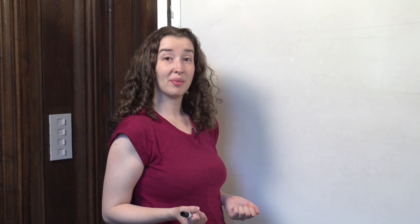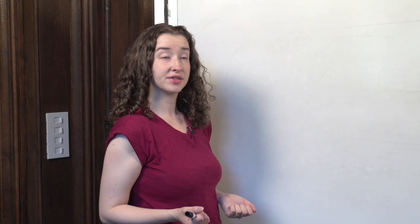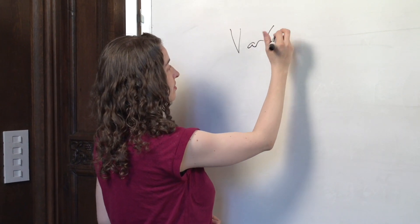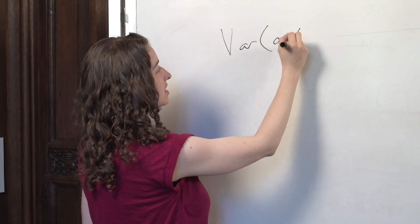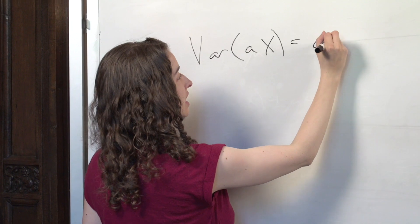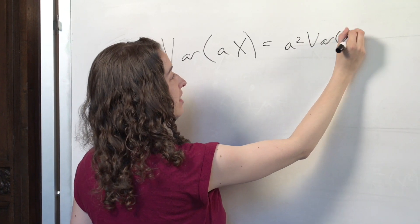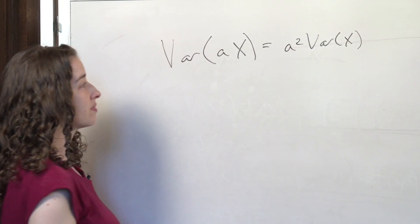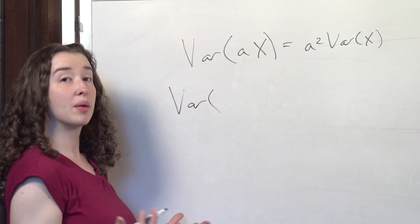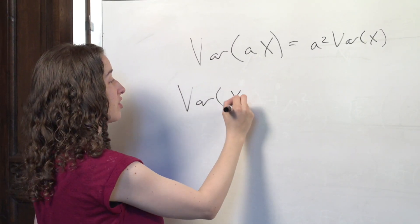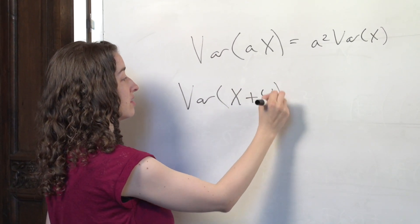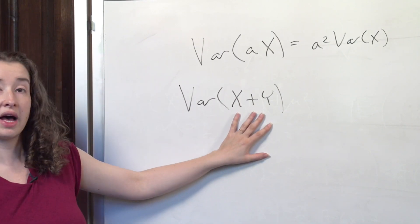Let's continue talking about properties of the variance. We said that the variance of a times x is equal to a squared times the variance of x. But what about the other property we discussed in terms of expectation? What about the variance of the quantity x plus y?